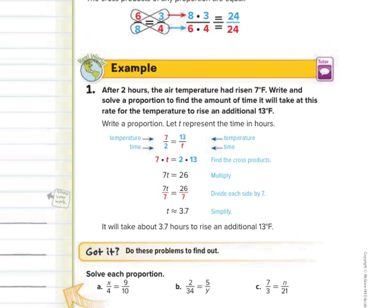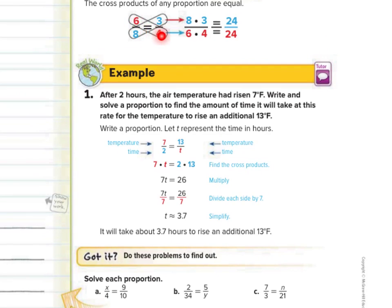Just like six times four equaled three times eight, we can say seven times T equals thirteen times two. Seven times T is 7T, and two times thirteen is twenty-six. Now that we've simplified both sides, we have a one-step equation. If we divide by seven on both sides, twenty-six divided by seven is approximately three and seven-tenths. So it will take about three and seven-tenths hours to rise an additional thirteen degrees Fahrenheit.